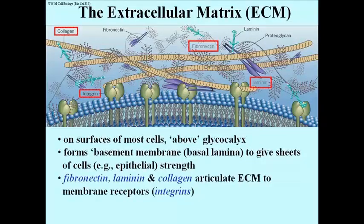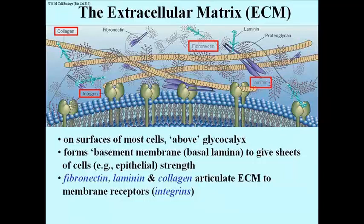Fibronectin, laminin, and collagen are all capable of articulating other parts of the extracellular matrix to membrane receptors called integrins. You can see out there in the upper part of the illustration, proteoglycans. These are proteins with rather large numbers of oligosaccharide sugars linked to them. These do not bind directly to any portion of the cell membrane, but they do bind, for example, to fibronectin, or they might bind to collagen.